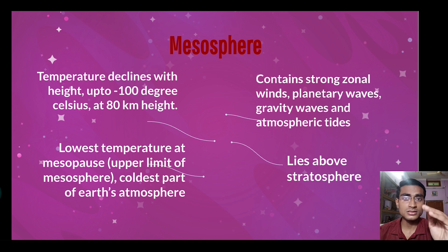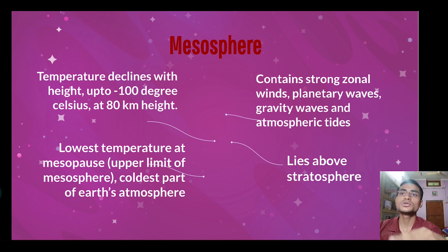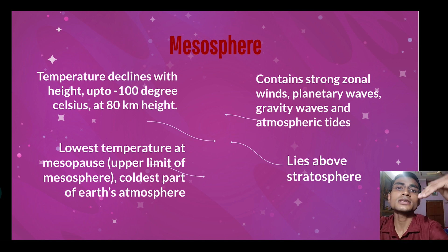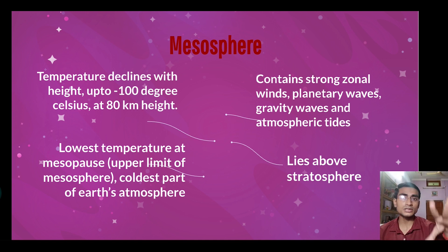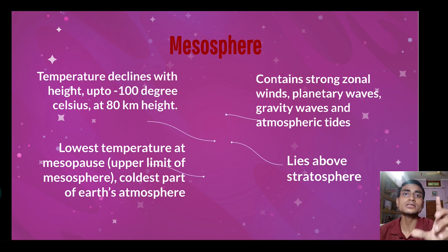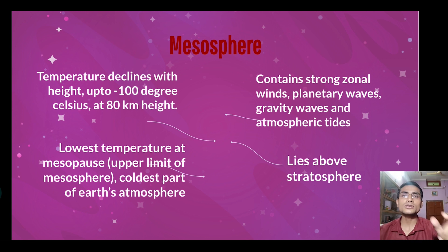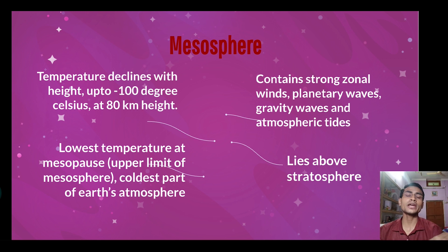The mesosphere extends only up to 80 km. The lowest temperature is found at the mesopause, because as temperature keeps decreasing upward in mesosphere, it reaches the lowest point at mesopause. The mesopause is the coldest part of the atmosphere. In the mesosphere, there are strong zonal winds, planetary waves, gravity waves, and atmospheric tides.